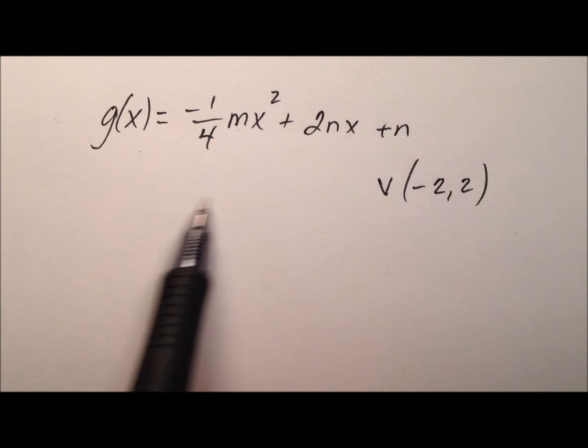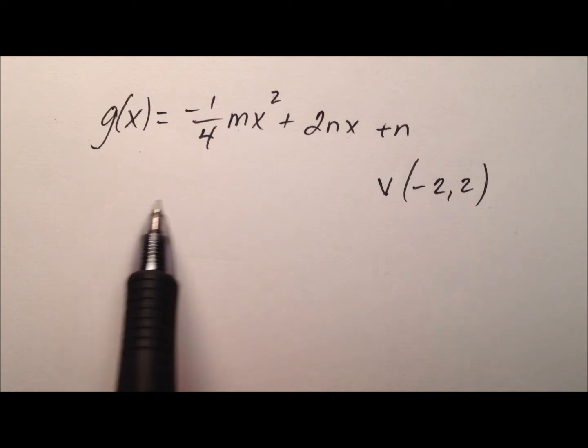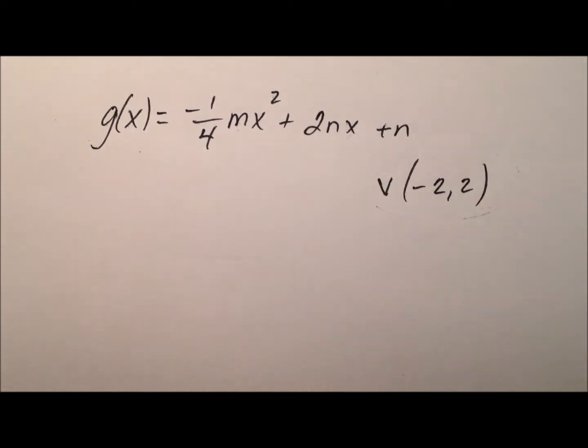And you know when you graph a quadratic function, it's going to be a parabola, and I know that the vertex of that parabola is going to be this ordered pair, negative 2, 2.